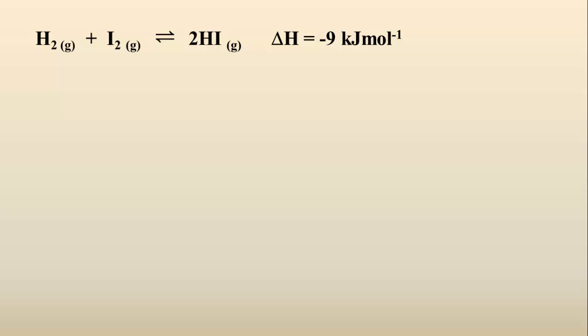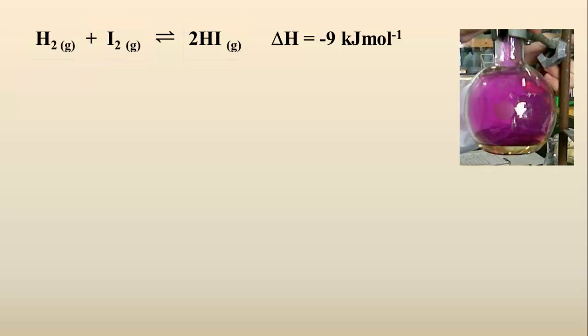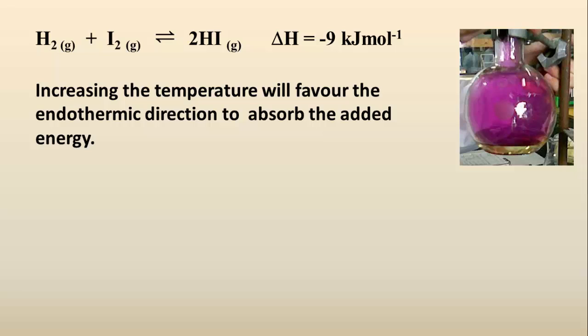Let's use an example to illustrate this. In this reaction the hydrogen and iodine gases are in equilibrium with hydrogen iodide. Hydrogen and hydrogen iodide are colourless gases and iodine is purple. So an equilibrium mixture will have a purple colour overall. The forward direction of this reaction is exothermic, seen here by the negative enthalpy change. So an increase in temperature on this reaction vessel will cause the equilibrium to shift in the endothermic direction to absorb this additional energy. So in this particular reaction the equilibrium will shift in the direction of the back or reverse reaction, because that is the direction which is endothermic.